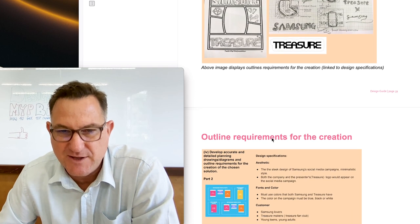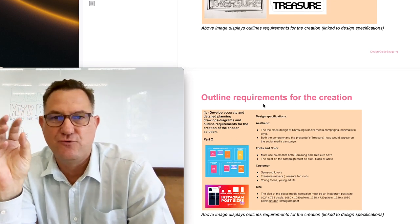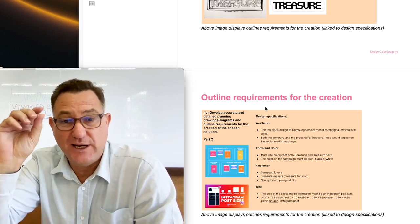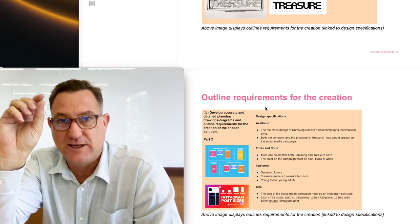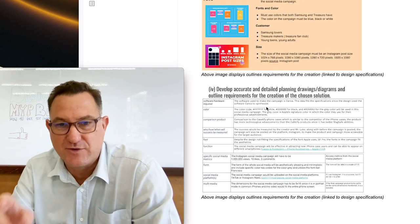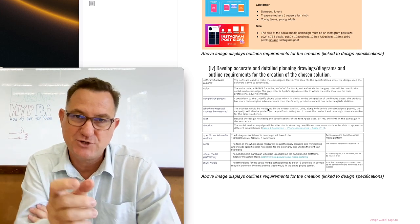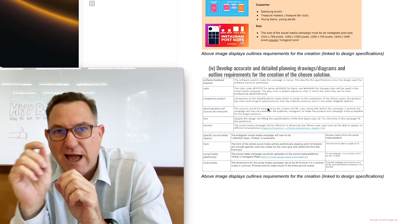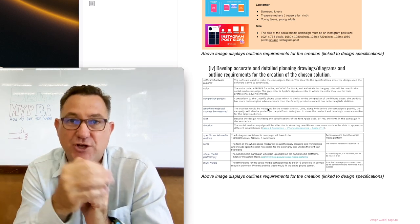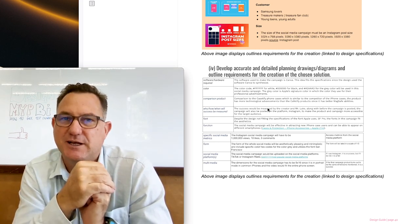Now here are some examples of the outline of requirements. This student has taken their design specifications and converted them into an outline of requirements, neatly presented with subheadings — the key element of the design specification expanded upon. Here's another example presented as a table: the left column has the design specifications and the right column adds the details, outlining the requirements. That is a really good way to present it — your drawings plus your outline of requirements tied back to the design specifications.